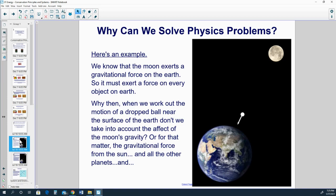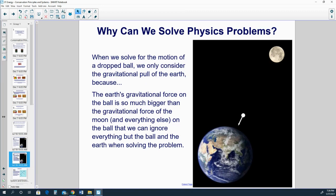For example, we know that the moon exerts a gravitational force on the earth, so it must exert a force on every object on earth. Why then, when we work out the motion of a dropped ball near the surface of the earth, don't we take into account the effect of the moon's gravity? Or for that matter, the gravitational force from the sun and all the other planets, and we can keep going.